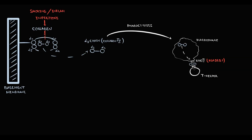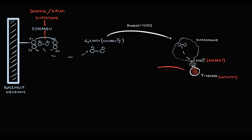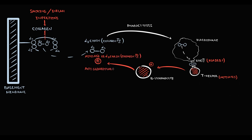So in individuals with the HLA-DRB1 allele, the MHC2 receptor presents alpha-3 chains of collagen in an abnormal way. Because of this, T-helpers recognize it as antigen, become activated, and activate B-lymphocytes. B-lymphocytes then produce autoantibodies against alpha-3 chains of collagen. Such antibodies we call anti-glomerular membrane antibodies, and they massively attack collagen molecules in the basement membrane.